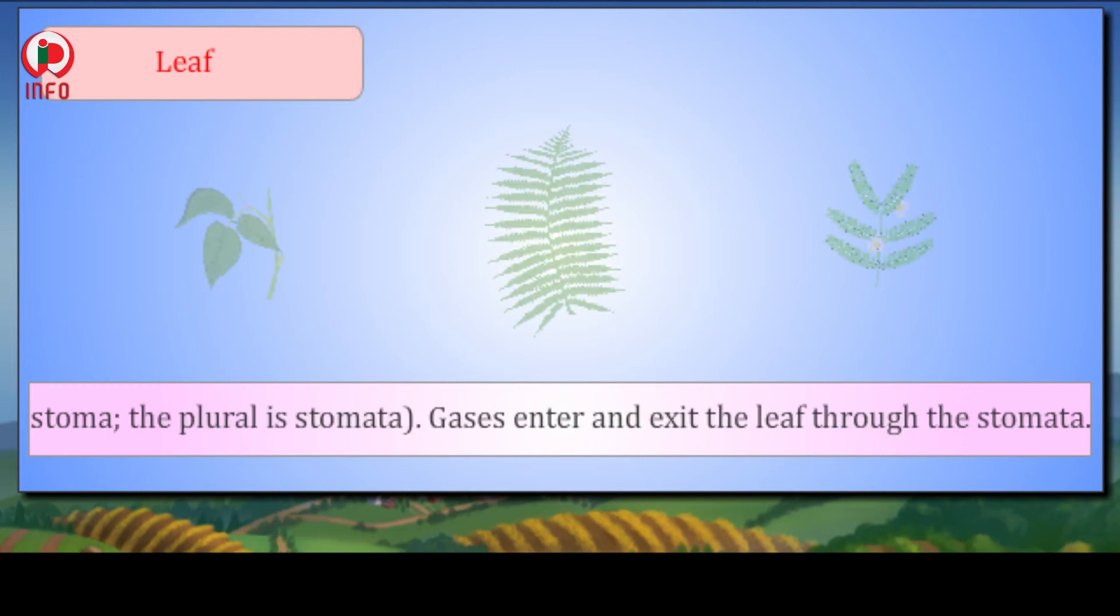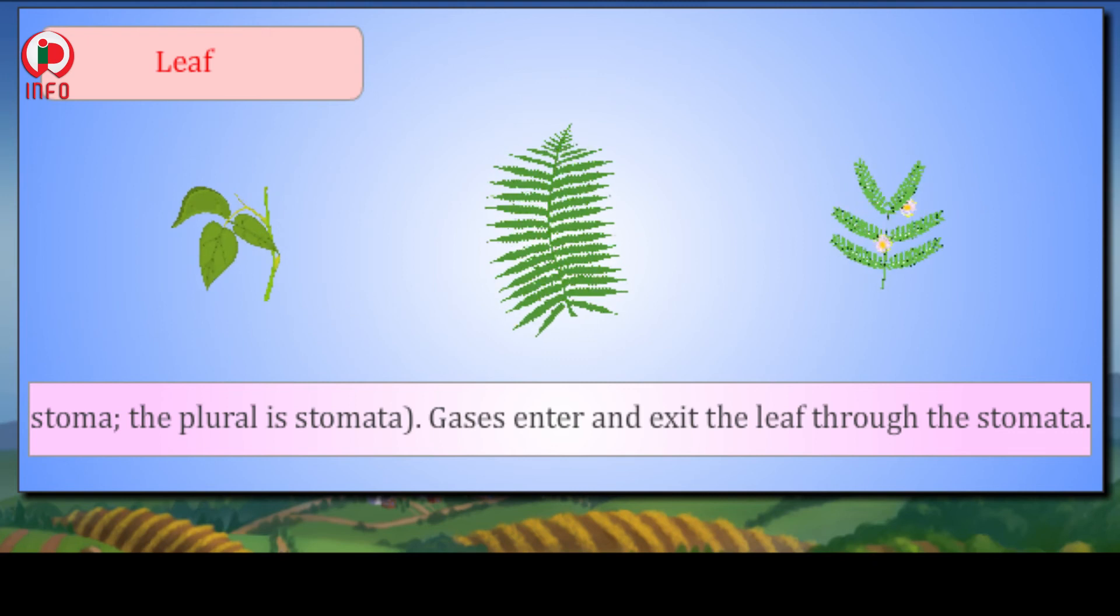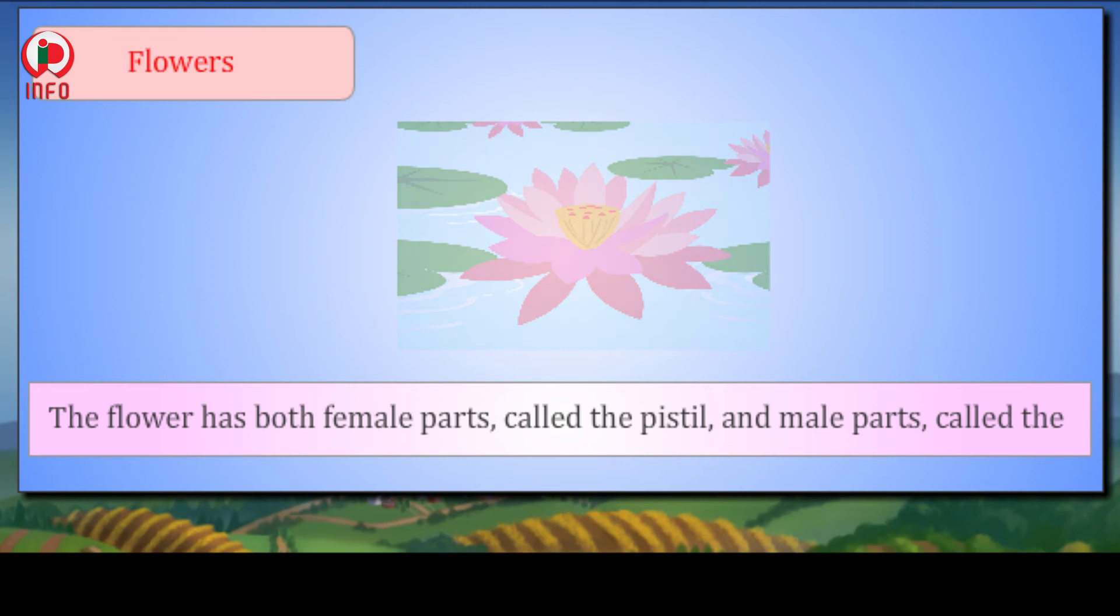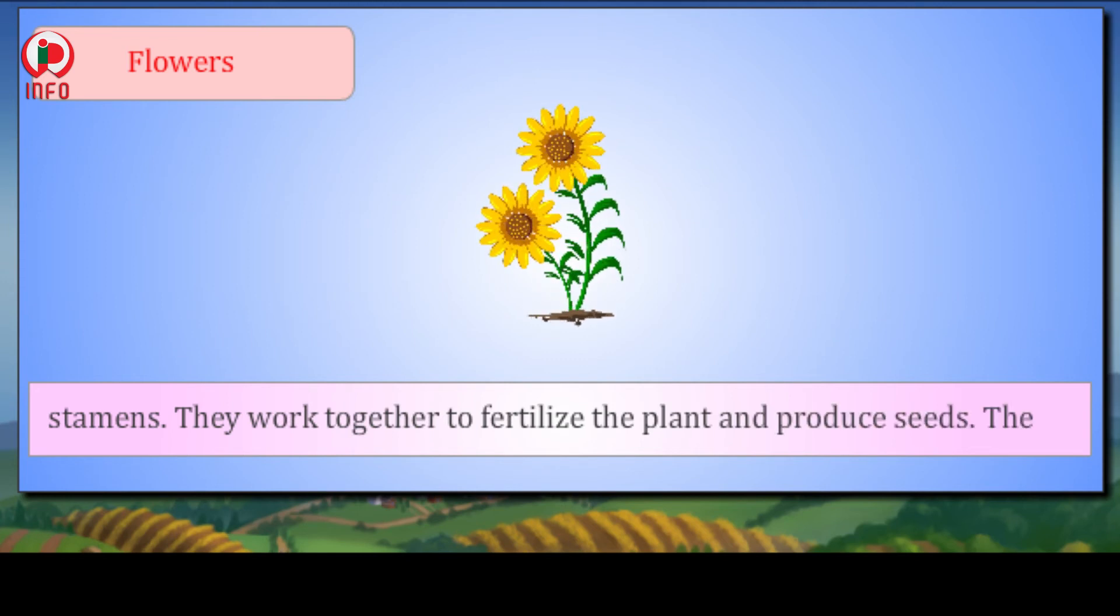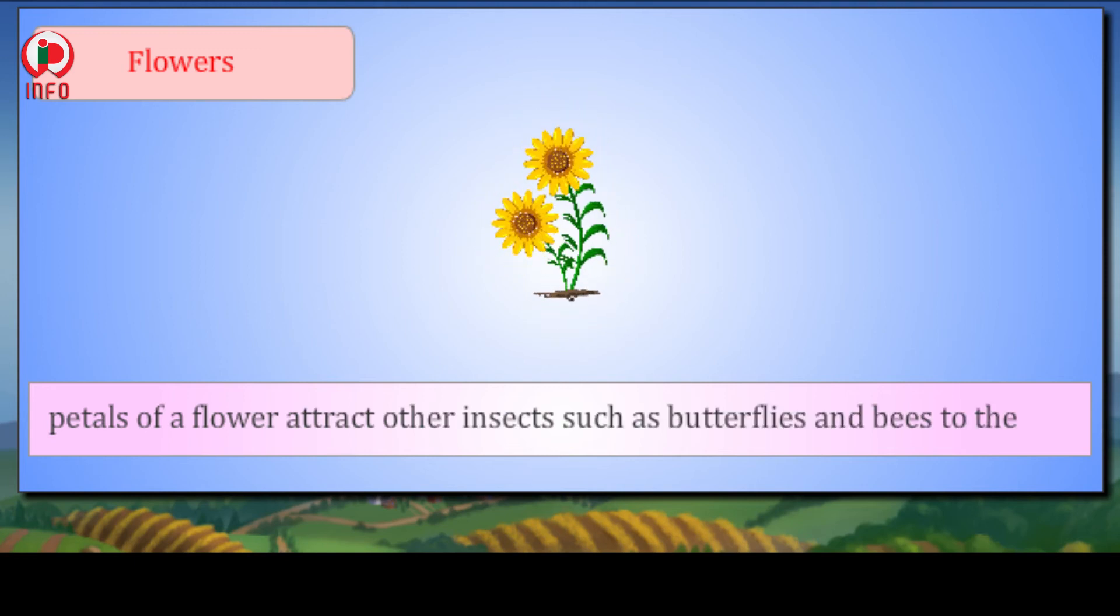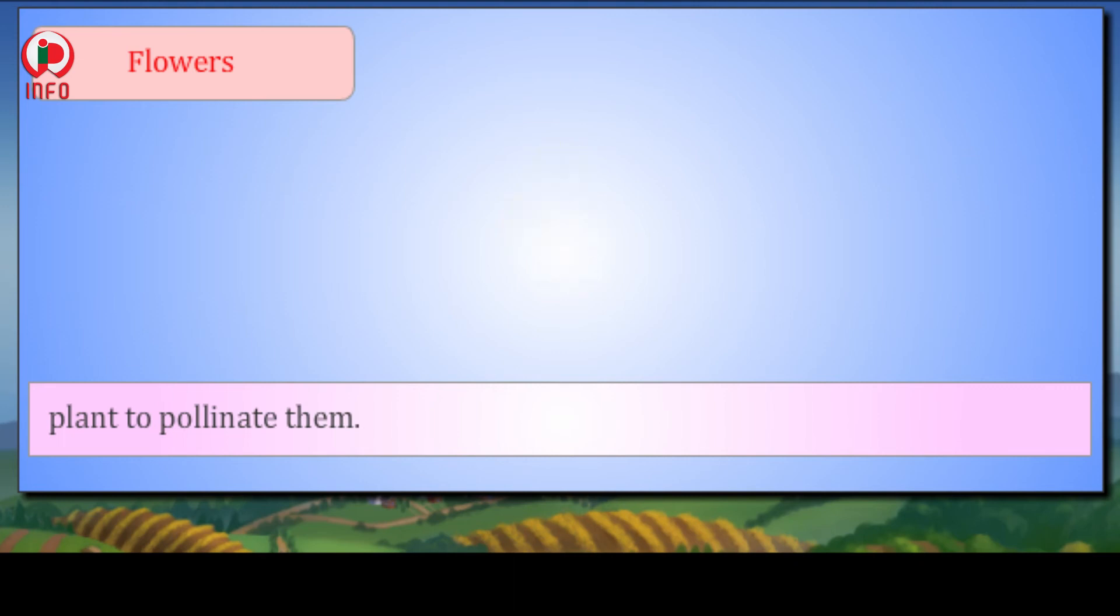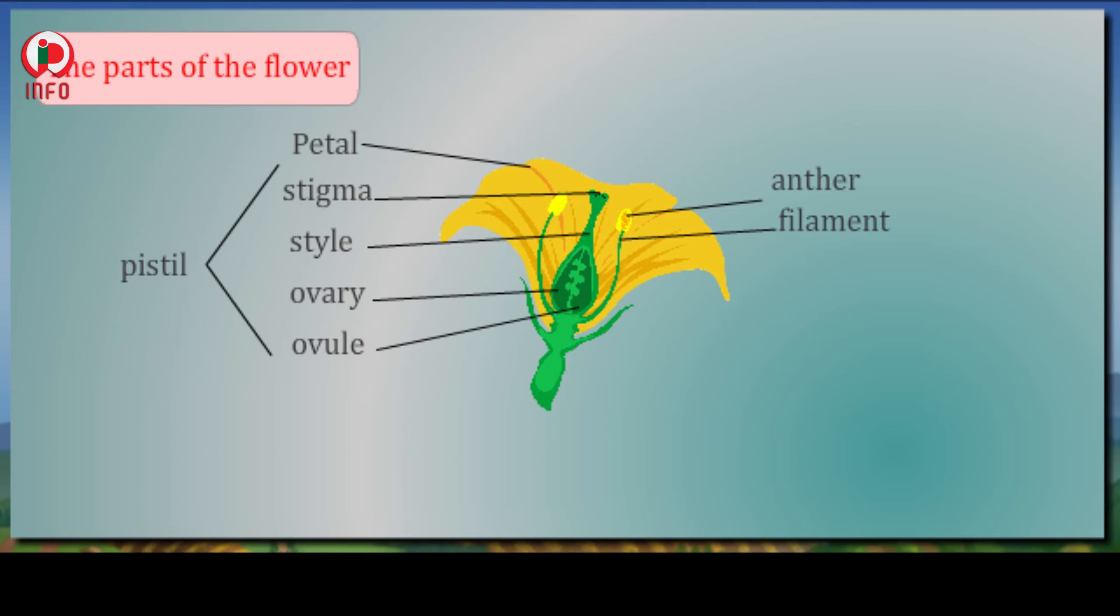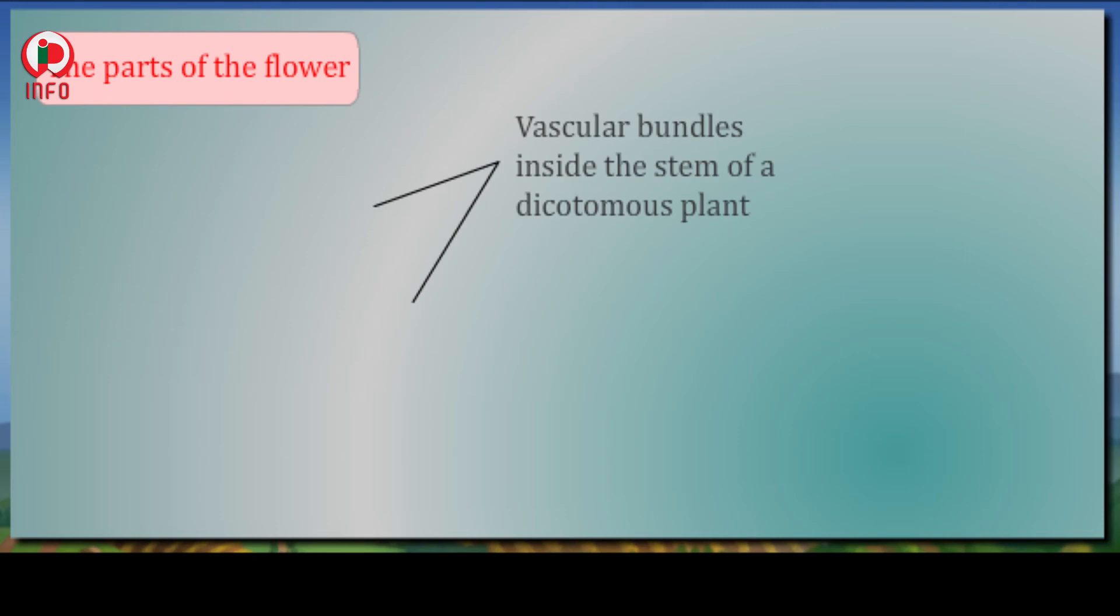Flowers: Flowers are the part of the plant that is responsible for making the food. The flower has both female parts called the pistil and male parts called the stamens. They work together to fertilize the plant and produce seeds. The petals of a flower attract other insects such as butterflies and bees to the plant to pollinate them. The parts of the flower: pistil, petal, stigma, style, ovary, ovule, anther, filament, stamen, sepal, receptacle, stem. Vascular bundles inside the stem of a dicotyledonous plant: xylem, phloem, cambium.